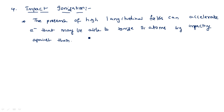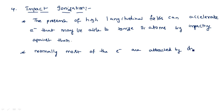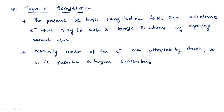Normally, most of the electrons are attracted by the drain. So it is possible to have a higher concentration of holes near the source. If the concentration of holes on the source is able to create a voltage drop on the source-substrate N-P junction of above 0.6 volts, then further effects occur.